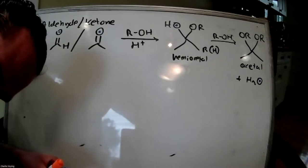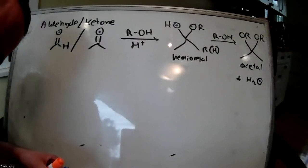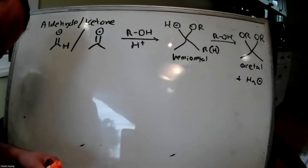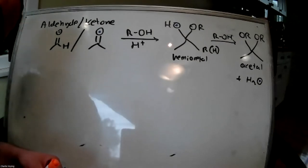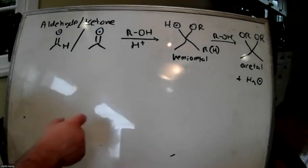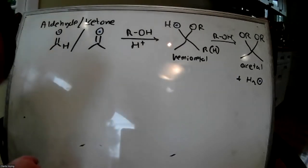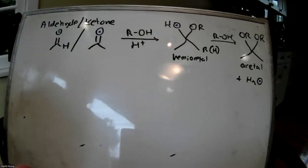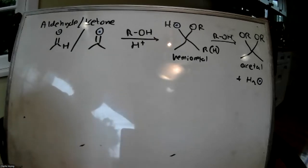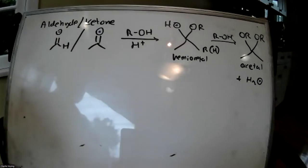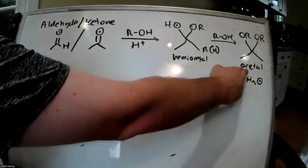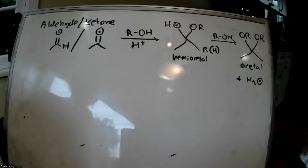Where will we see hemiacetals during biological reactions? Carbohydrates — in a monosaccharide you'll see hemiacetals, and in a polysaccharide you'll see acetals, which are part of the glycosidic linkage. You'll see hemiacetals and acetals when studying glycogen formation, glycogenolysis, and related processes.